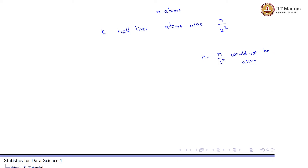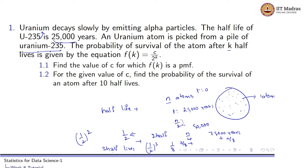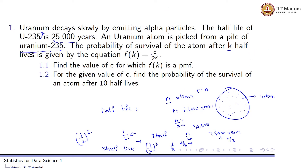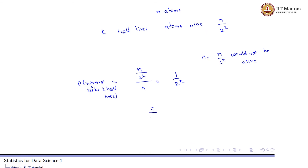So for the probability, if you look at this, the probability of survival of the atom after k half-lives is given as c / 2^k. The probability equals the number of atoms left, n / 2^k, divided by the total number of atoms initially, n. So the probability equals 1 / 2^k. The probability of survival after k half-lives is 1 / 2^k. So equating: c / 2^k = 1 / 2^k, which implies c = 1.